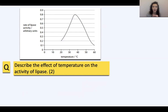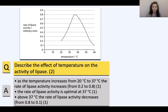Pause the video and have a go at describing the effect of temperature on the activity of lipase. As the temperature increases from 20°C to 37°C, the rate of lipase activity also increases — you can include the units, from 0.2 to 0.8. That would get you one mark. The rate of lipase activity is optimal, or highest, at 37°C. Then above 37°C the rate of lipase activity decreases — from 0.8 to 0.1 — or you could say decreases rapidly. Remember, it's just describing what's happening in the graph.